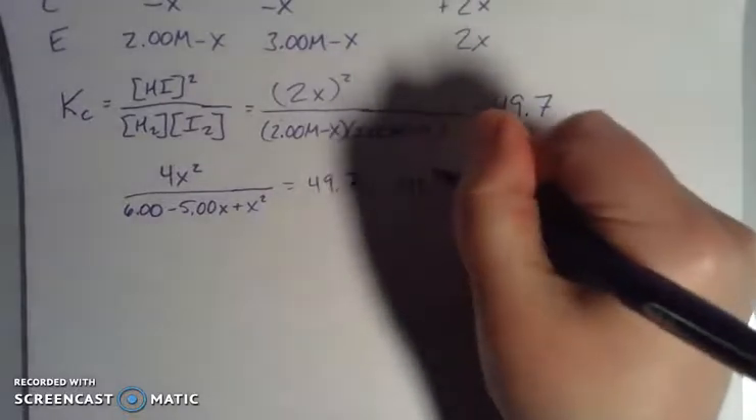And then my outside here is a negative x times a negative x, which gives me an x squared, and all of that is equal to 49.7. Now again, there's lots of different ways that you can solve this thing, but this is kind of the way that I would do it. I'd start unpacking these things and combining like terms. Now my next step, again if it's me who's in charge of solving this, is I would multiply my denominator here by my equilibrium constant. So when I do that, then I end up with 4x squared is equal to 298.2 minus 248.5x.